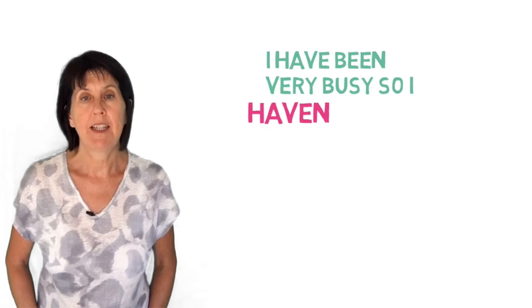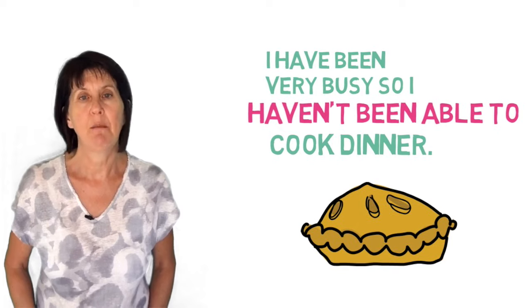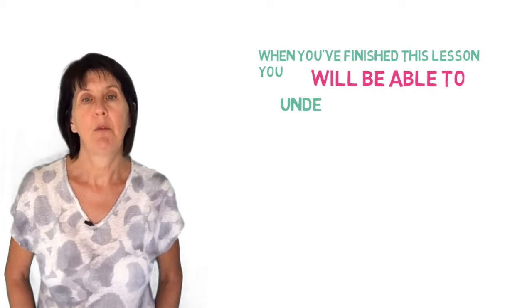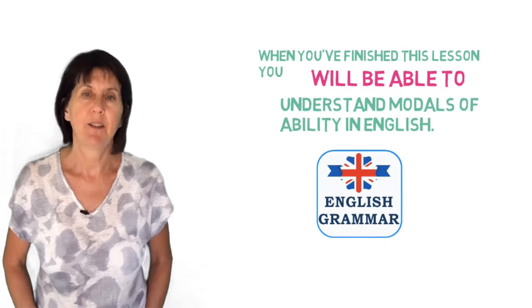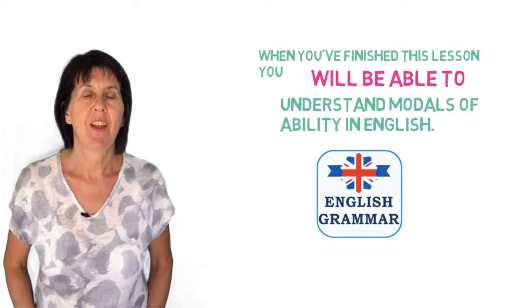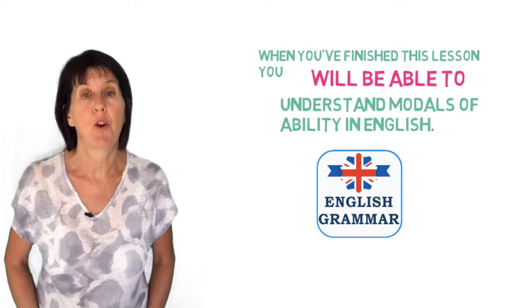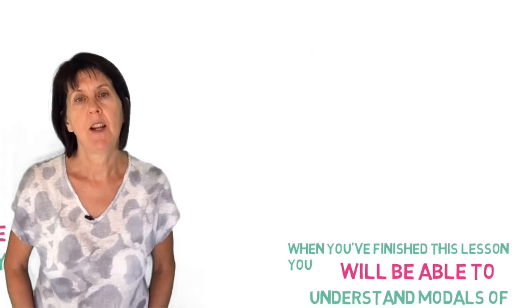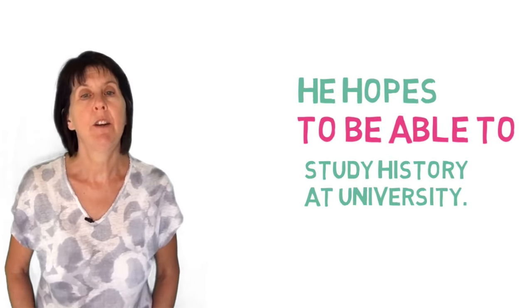So: I have been very busy so I haven't been able to cook dinner — this is the present perfect. Or: when you finish this lesson, you will be able to understand modals of ability in English — this is the future simple. We also use be able to after certain verbs that are followed by the infinitive. For example, he hopes to be able to study history at university. Note we don't use able to in continuous forms.